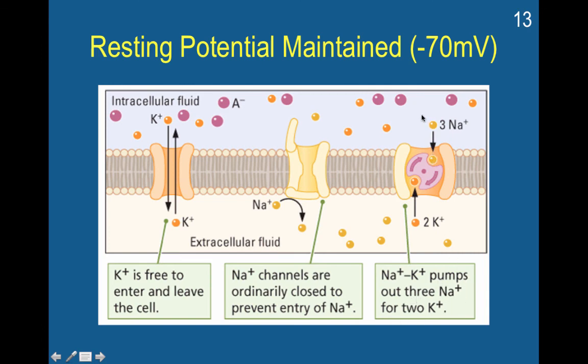The pump takes out three sodium ions for every two potassium ions brought in. So from inside the cell, three sodium ions come out and two potassium ions come in, restoring the ion balance needed for resting potential.